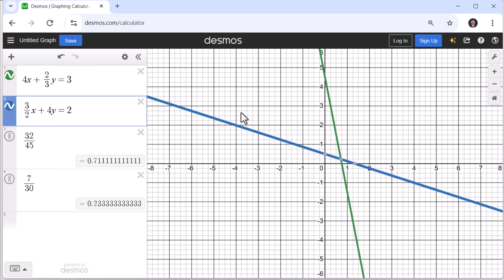Desmos will only give us a decimal approximation for the ordered pair for the point of intersection. So we do have to get decimal approximations for 32/45 and 7/30, which I've done here on the left.